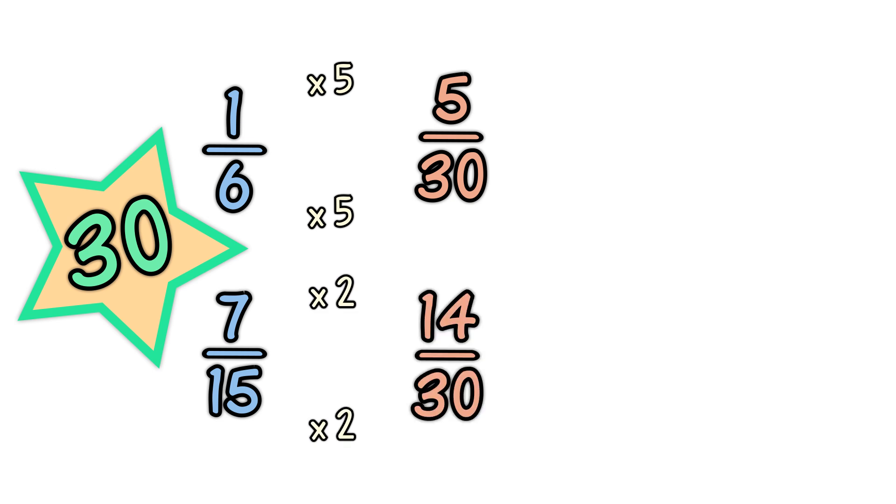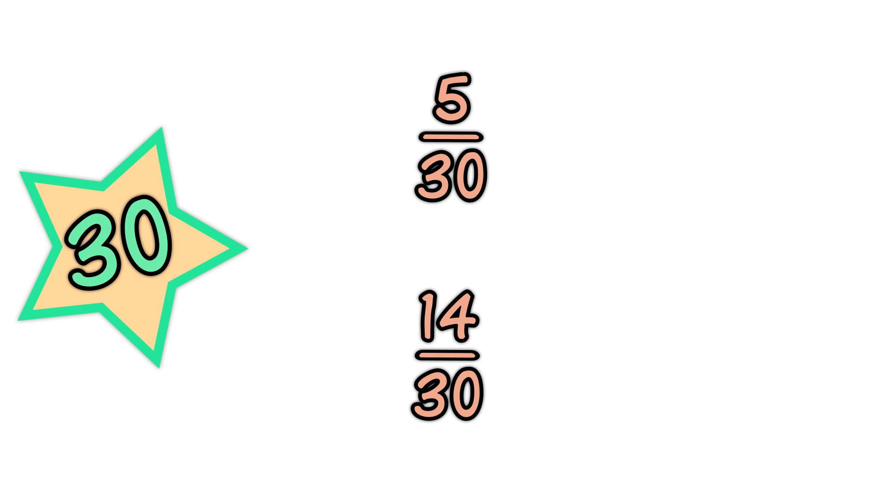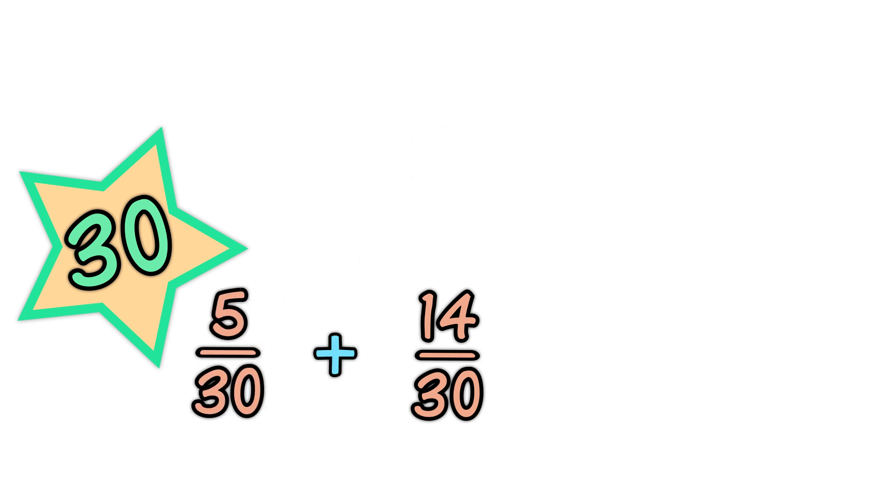One-sixth becomes five-thirtieths. And seven-fifteenths becomes fourteen-thirtieths. Now we can do the addition by adding the top numbers. Five-thirtieths plus fourteen-thirtieths equals nineteen-thirtieths. The fraction is already as simple as it can be. The answer is nineteen-thirtieths.